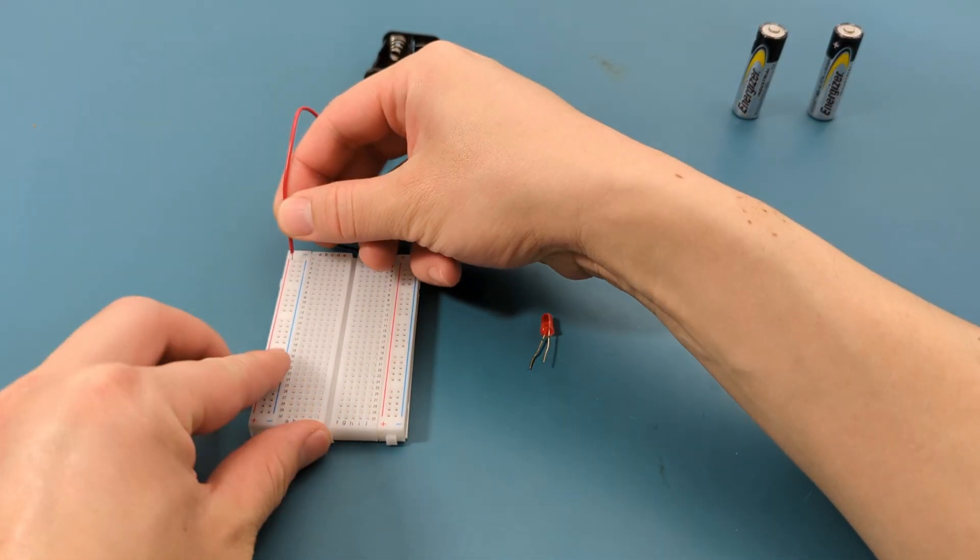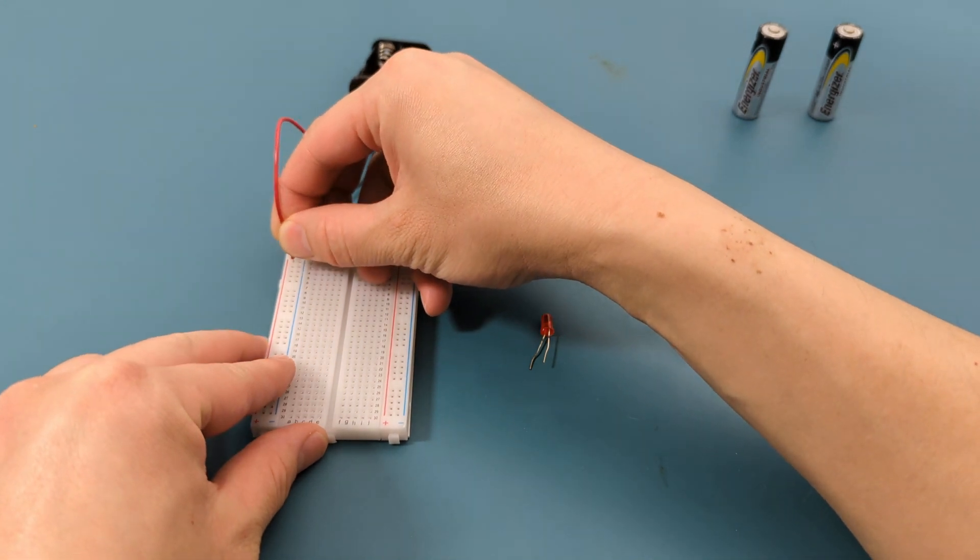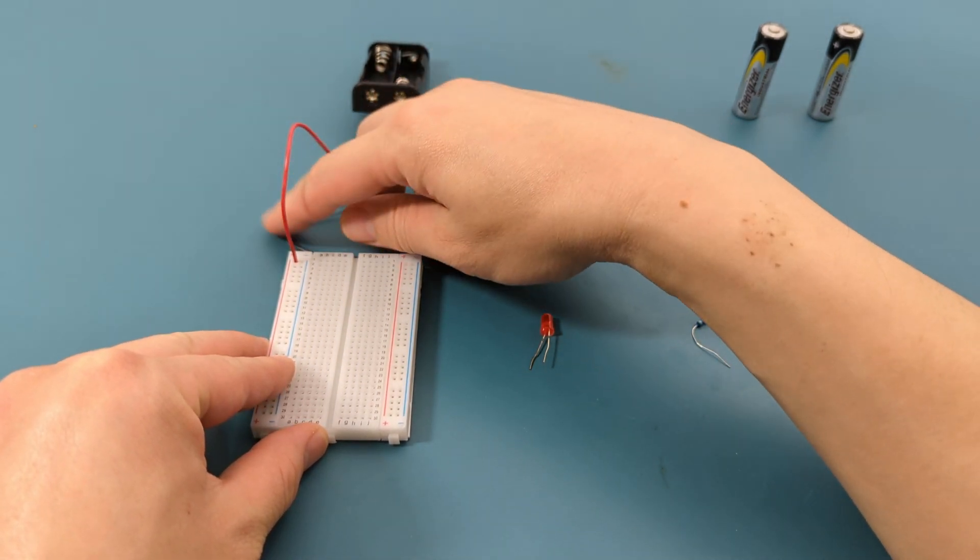First, connect the positive lead of your battery holder to the red power rail, and the negative lead to the blue power rail.